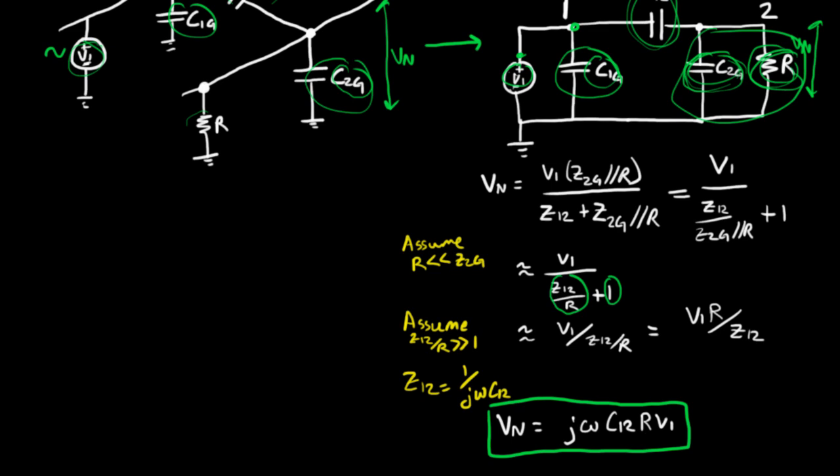And of course, we want the noise voltage to be as low as we can, so we want to decrease all the terms that are in this equation, ωC sub 12 R and V1. But in practice, we really can't do much about ω because that's from the source circuit. We don't control it. And likewise, we can't do much about V1 because that's also from the source circuit.